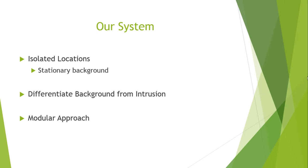My system is designed to work for isolated locations, which means there is a stationary background, and I differentiate the background from an intrusion in the foreground. My implementation is modular, so you can modify one particular module without affecting the functionality of other modules. This helps to optimize in the future — if you want to replace a basic image change detection technique with a better one, you just replace that module without modifying the entire system.